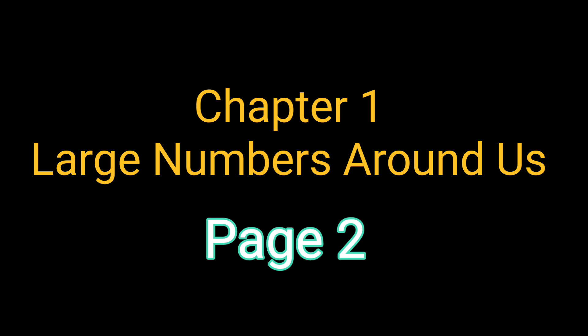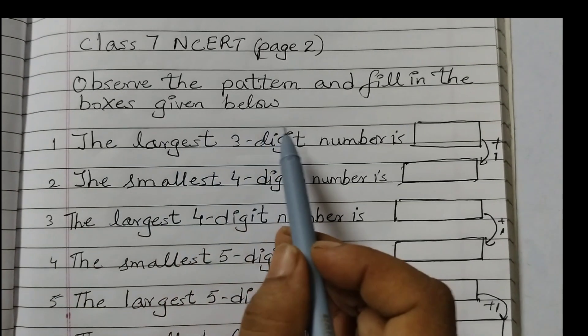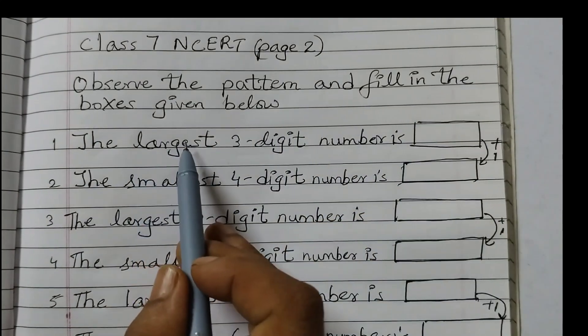The name of the chapter is Large Numbers Around Us. Observe the pattern and fill in the boxes given below.